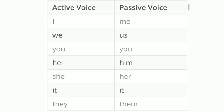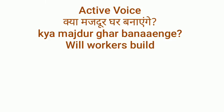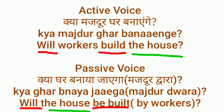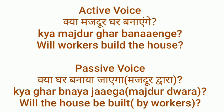Remember how pronouns change in passive voice: I → by me, we → by us, you → by you, he → by him, she → by her, it → by it, they → by them. 'Will workers make a house?' — 'house' is the object so it becomes subject. Passive question: 'Will the house be built by workers?' Third form of 'build' is 'built.'